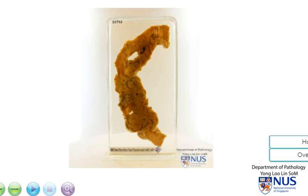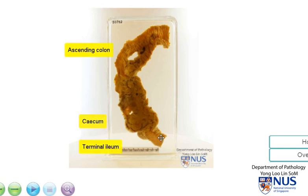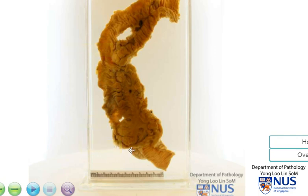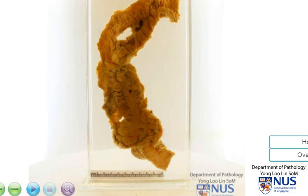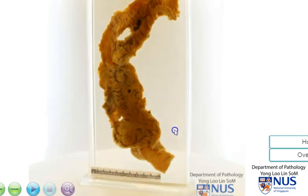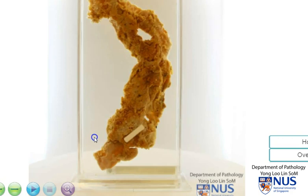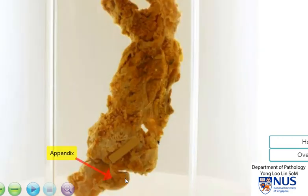Here is a specimen of the proximal colon — the ascending colon, the cecum, and the terminal ileum. We can recognize this because we can just about make out the appendix here. This is the region of the ileocecal valve. Let me rotate this and we can just see that this part is the appendix.